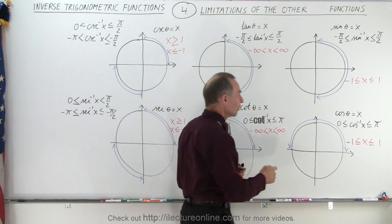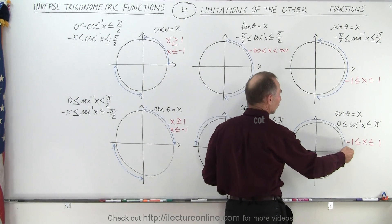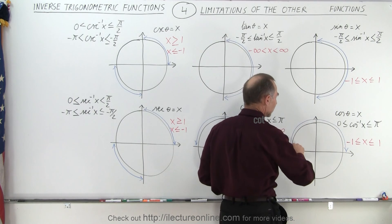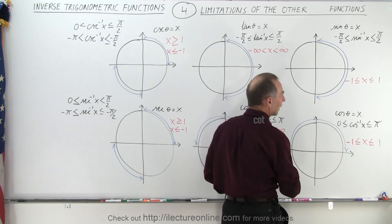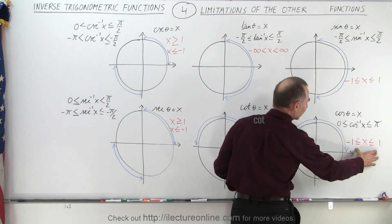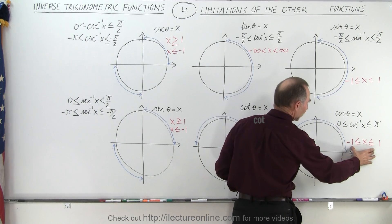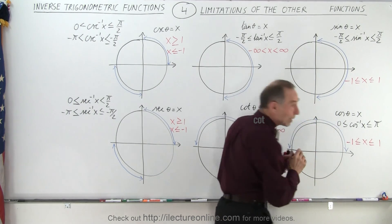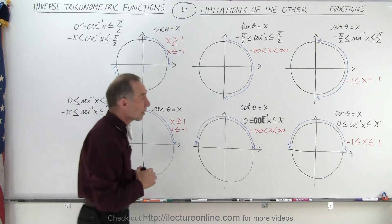For the cosine, notice that the angles associated with the inverse cosine go from 0 to 180 degrees or from 0 to pi. And also notice that the values for x are also limited from minus 1 to 1, anything in between but nothing bigger than 1 and nothing smaller than negative 1.